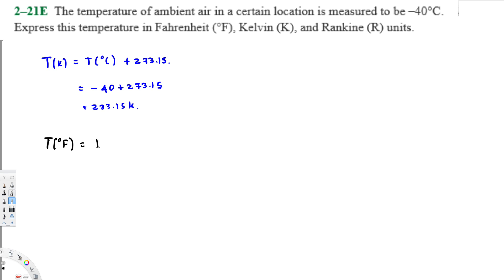So this one is going to be 1.8 times T(°C) plus 32. So this is the equation to convert from degree Celsius to Fahrenheit.